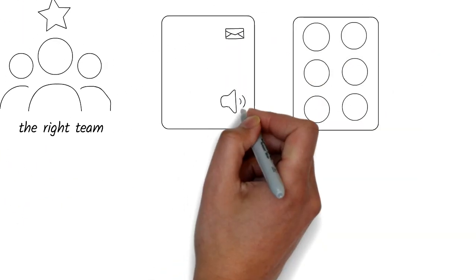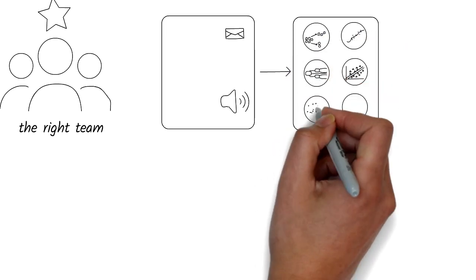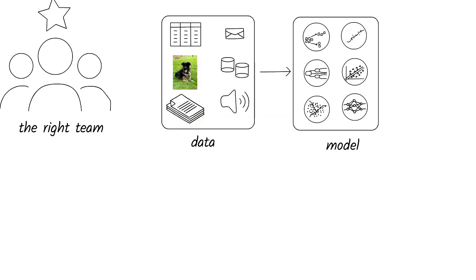For machine learning to work, we need lots of data that we can use to train models that in turn represent that data effectively. Data comes in different forms like tables, images, documents, emails, voice, and so on. Models also come in different forms.